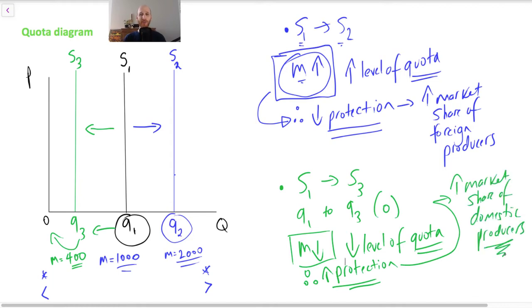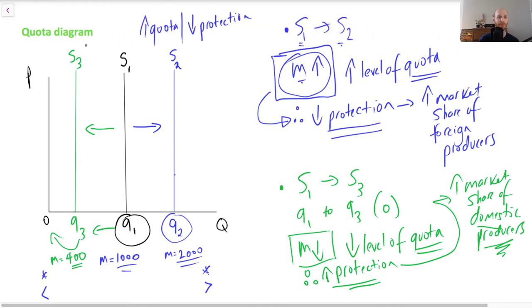And we increase the market share of domestic producers. So here, if we reduce protection, we increase the market share of foreign producers. If we increase protection, we're increasing the market share of domestic producers, right? So again, if we increase the quota, reduce protection. If we decrease the quota, we increase protection. And this is what the quota diagram looks like.